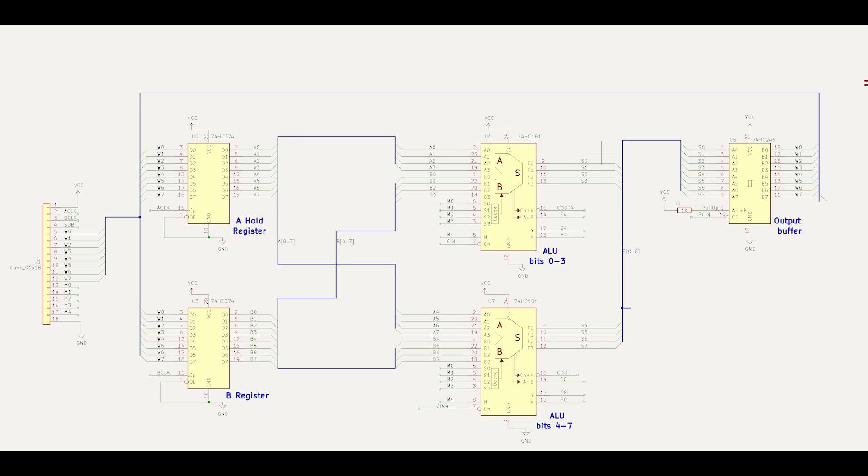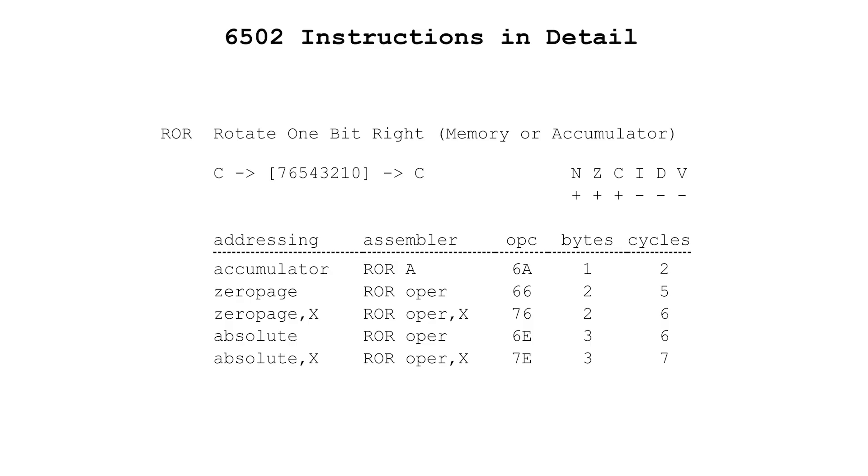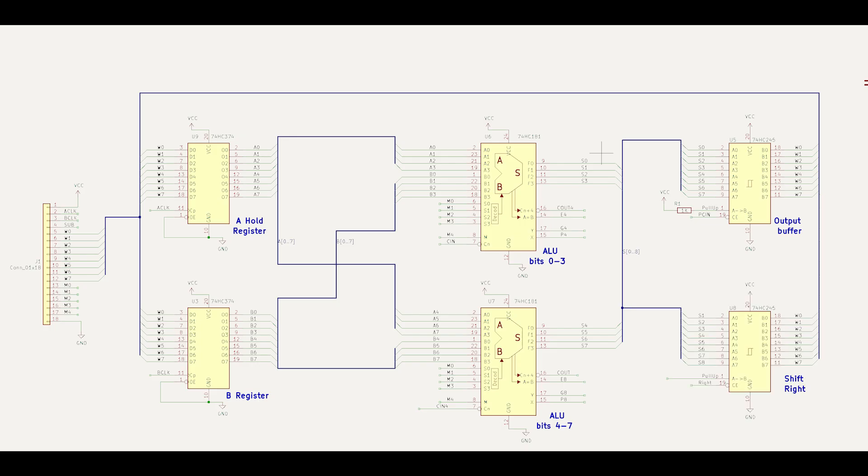Now remember, that the one operation that the 74HC181 ALU can't do is right shift. To solve this, I've added an extra 74HC245, where the inputs are skewed relative to the outputs by one bit position. So S1 from the ALU goes to W0, S2 goes to W1, all the way through S8, which goes to W7. Now S8 is actually the carry signal from the status register, which we'll come to a bit later.